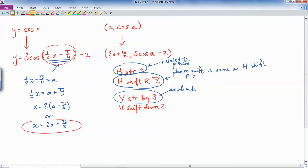So phase shift is the same as horizontal shift if you've already done the horizontal stretch or shrink first. That's an important one. So notice here, if I had done this one instead for my x value and said 2(a + π/4), and then the y value is still 3 cos a minus 2, you're still going to get the right graph if you use the right transformations here.